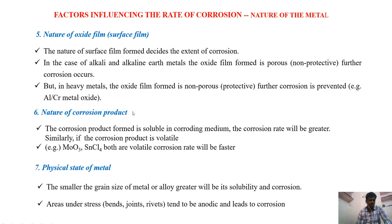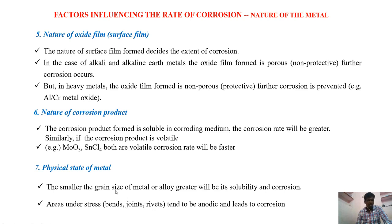Next is the nature of the corrosion product. If that corrosion product is soluble in the electrolyte, then the rate of corrosion will become more. If that corrosion product is volatile, the rate of corrosion will also become more. Next is the physical state of the metal, which is very important. If the metal has complex shapes like grains or joints, then corrosion will become more. Smaller the grains of the metal, the more easily soluble it is and the greater the corrosion.